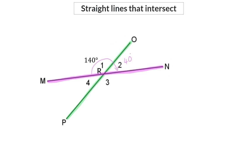Similarly, using straight line PO, we could have said that angle R4 should also be 40 degrees. And continuing like this, we can say that focusing on line MN again, along with angle R4, which is 40 degrees, angle R3 then has to be 140 degrees.